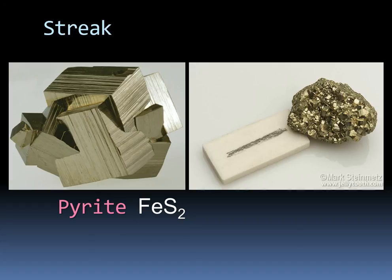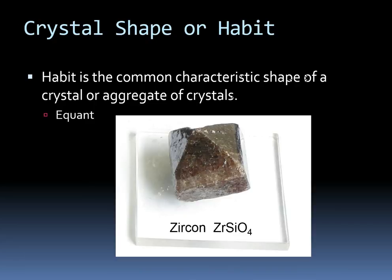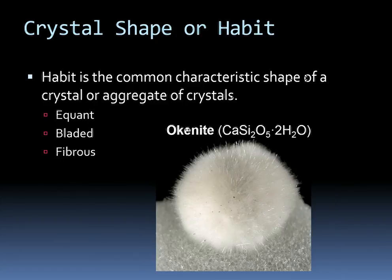Now let's look at how minerals grow — this is called the habit. The habit is the common characteristic shape of a crystal or aggregate of crystals. A zircon is equant, meaning it's about equal in size all the way around. Kyanite is bladed, looking like knife blades. Okenite is fibrous — it may look like a tribble, but if you touch it, those are like shards of glass. For those unfamiliar, tribbles were the fuzzy critters from the original Star Trek.